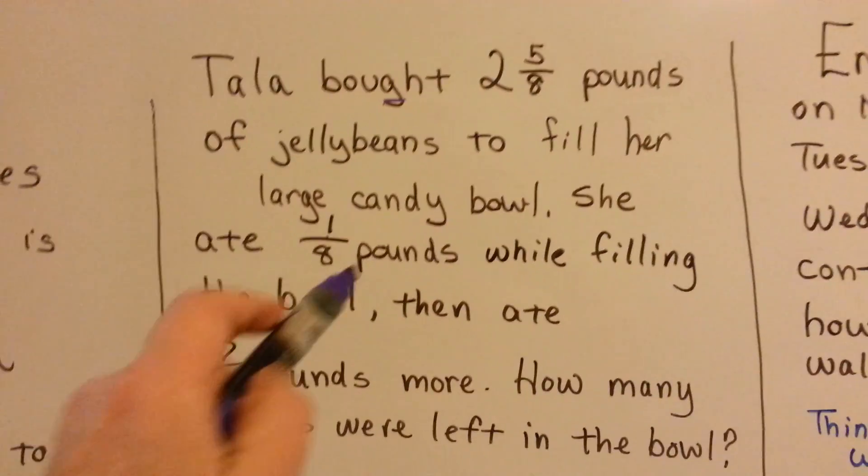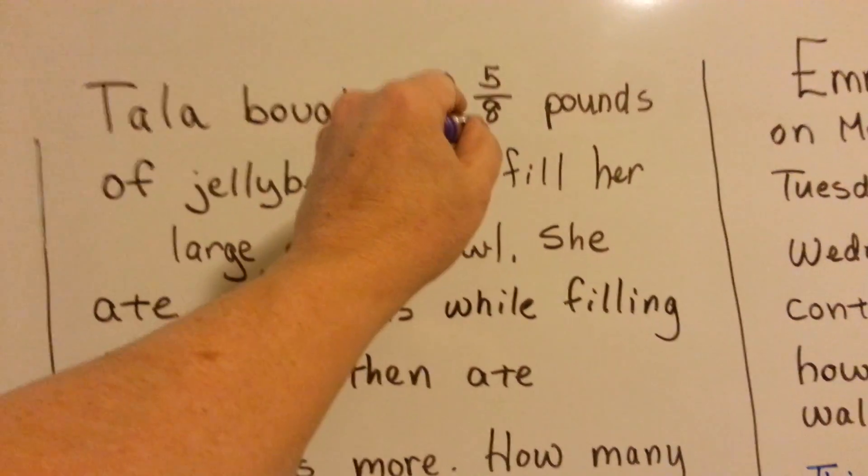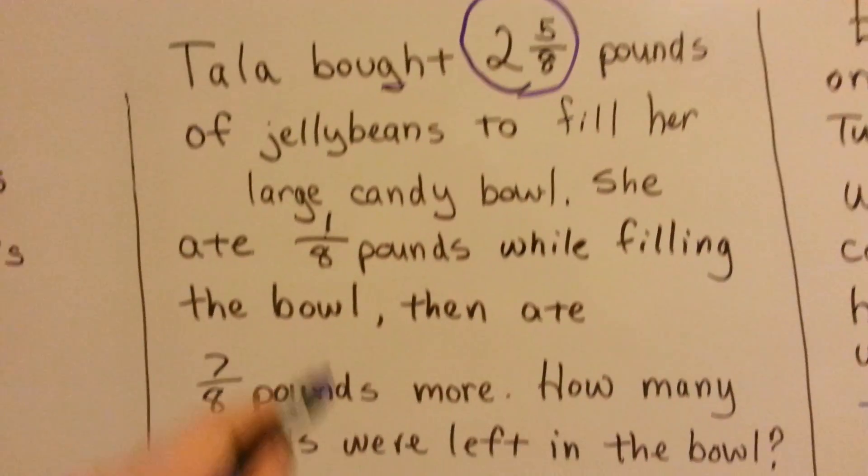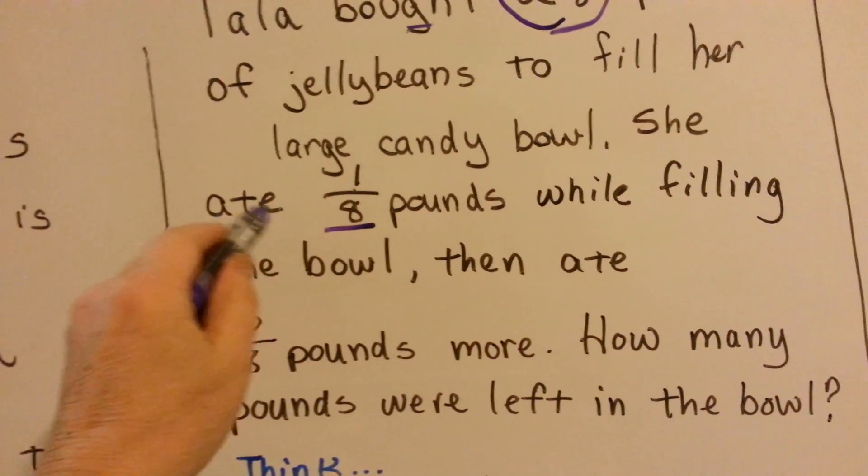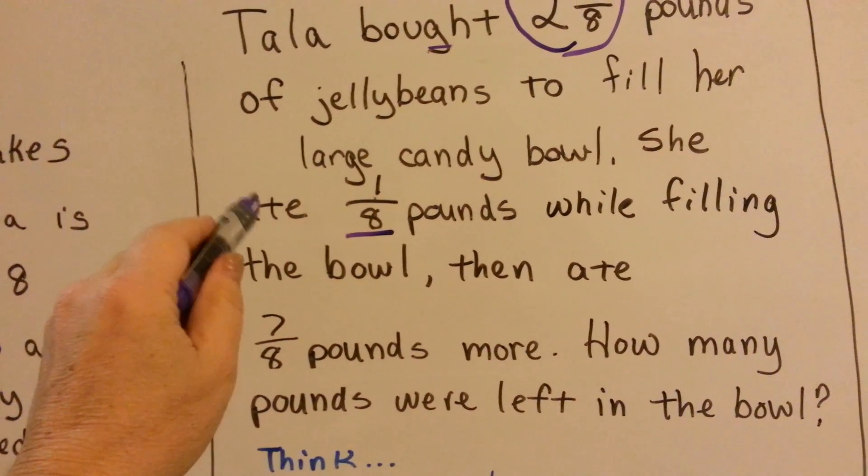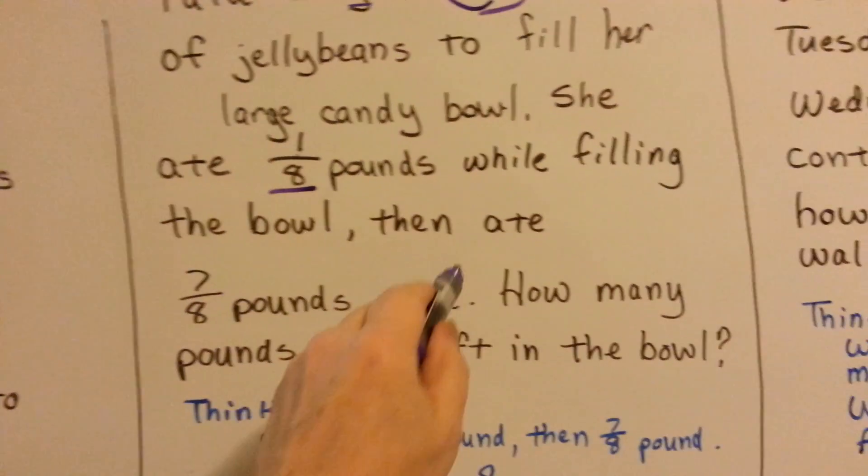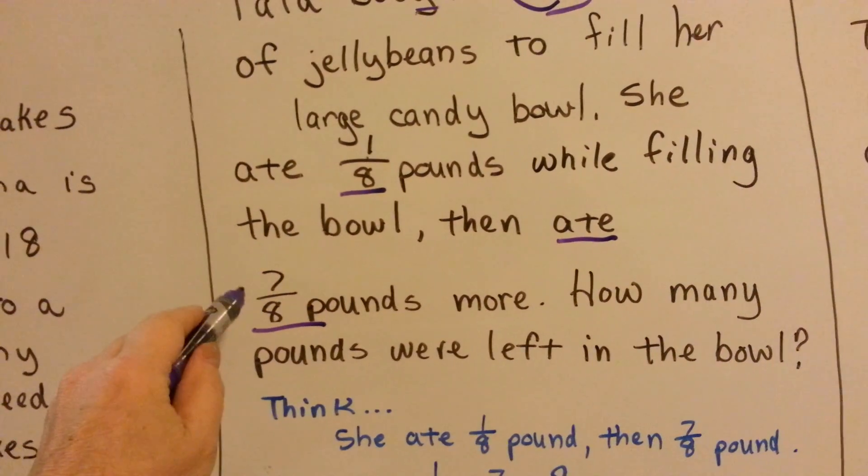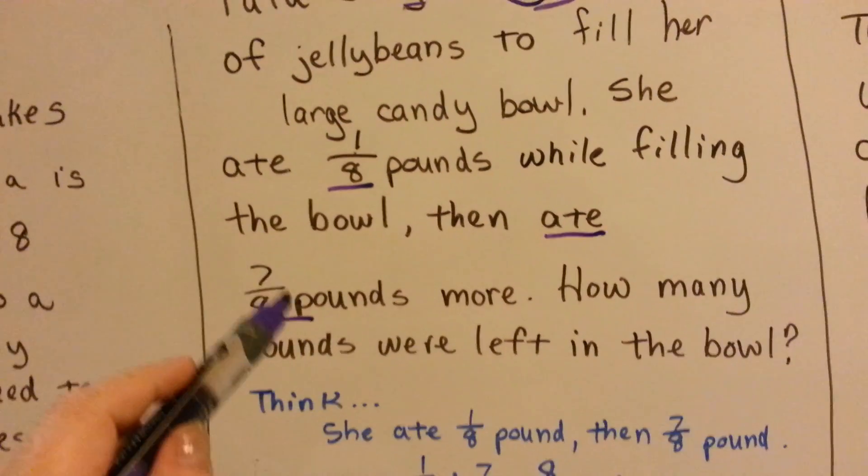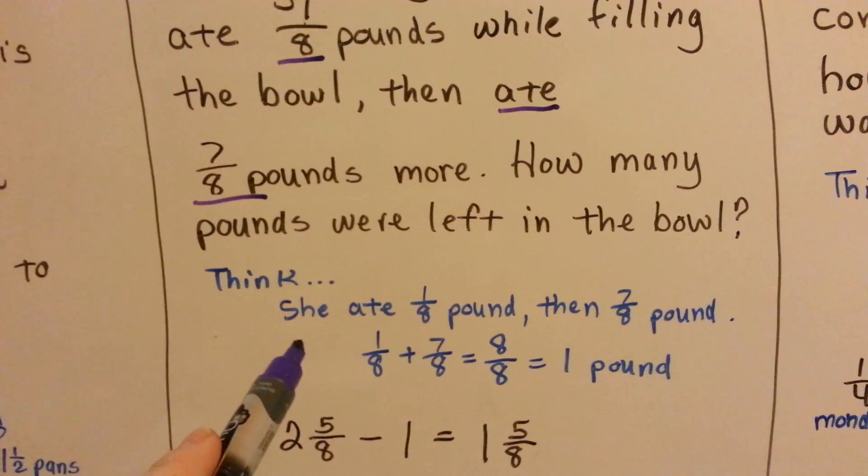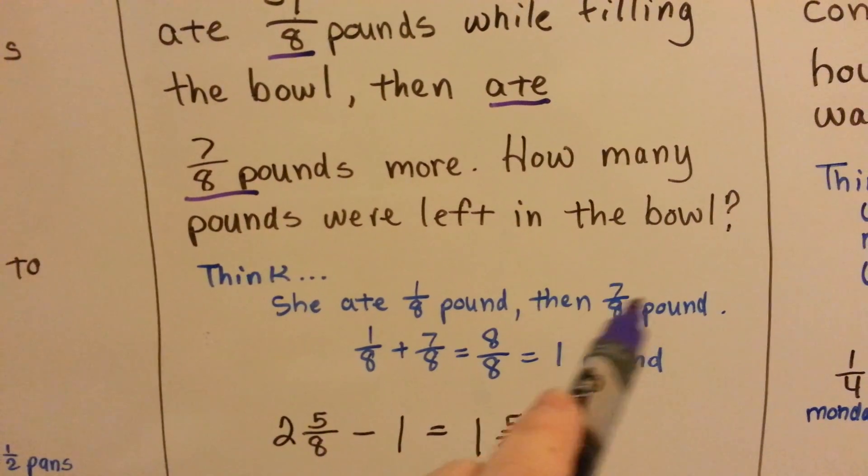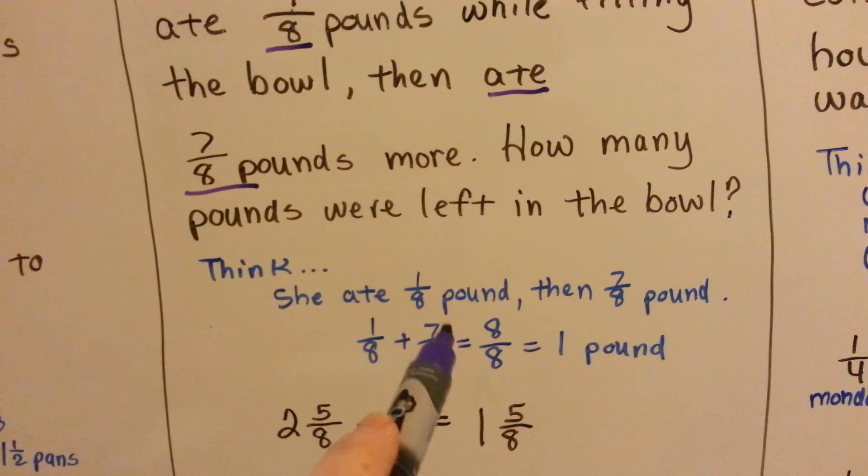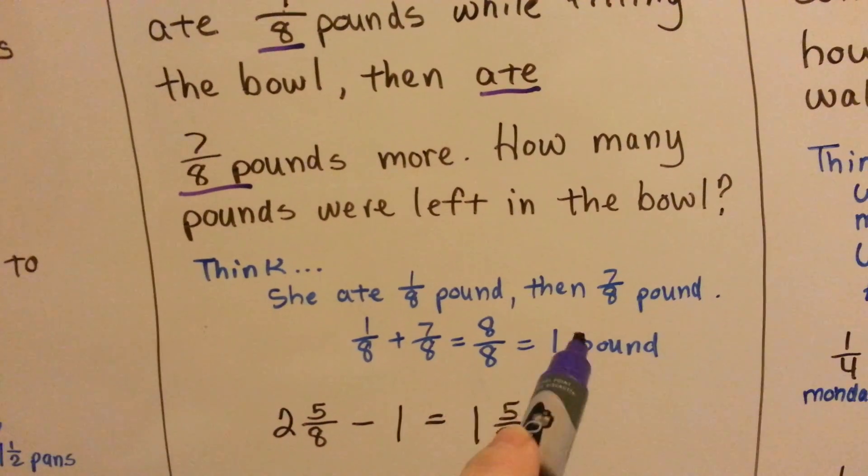Well, look at the information that we were given. She originally bought 2 and 5 eighths. Then she ate 1 eighth. If she ate it, it went away. That's subtraction. She ate another 7 eighths. So that's another subtraction. So what we think to ourselves is, if she ate 1 eighth, then 7 eighths. 1 eighth plus 7 eighths is 8 eighths. That's equal to 1.